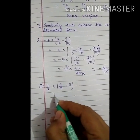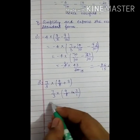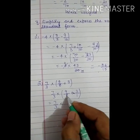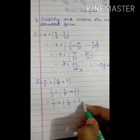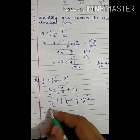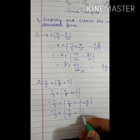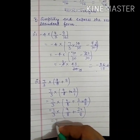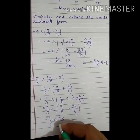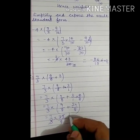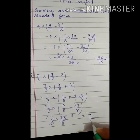Now part 2 is: 7 upon 3 multiplied by (9 upon 8 plus 3 upon 1). LCM of 8 and 1 is 8, so 9 upon 8 plus 24 upon 8 gives 33 upon 8. Then 7 upon 3 multiplied by 33 upon 8: 3 elevens are 33, and 11 sevens are 77 upon 8.